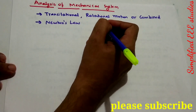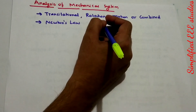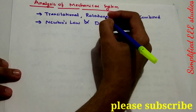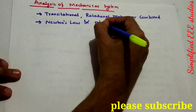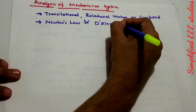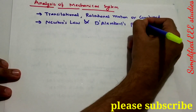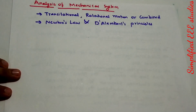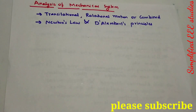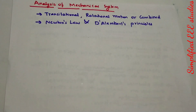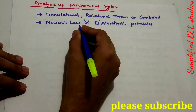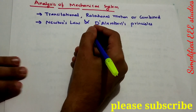Newton's law, which you have studied in PU classes, and D'Alembert's principle, which you must have studied during engineering first year — these are the basic principles required to construct mechanical modeling in control system engineering. If you want to prepare mathematical modeling in the mechanical system, you should know Newton's law as well as D'Alembert's principle.